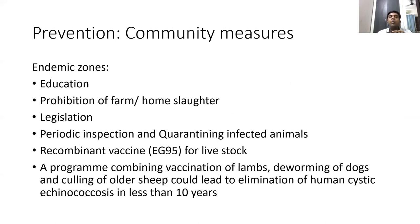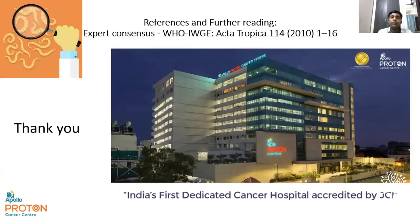Prevention is very important, and WHO has focused on community measures in endemic areas. Key measures include education about hygiene especially in slaughterhouses, appropriate legislation, periodic inspection and quarantine of infected livestock, and vaccination of sheep with the recombinant EG95 vaccine for high-risk livestock. A combination of vaccination, deworming, and systematic slaughter practices can help eliminate the disease.